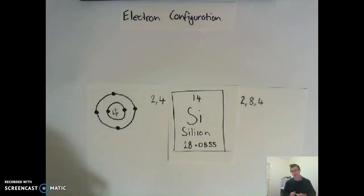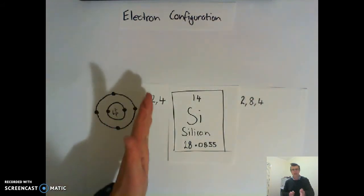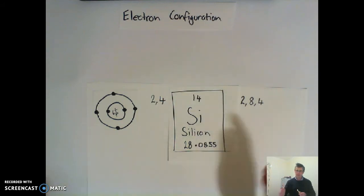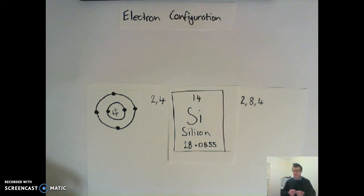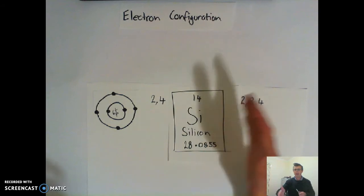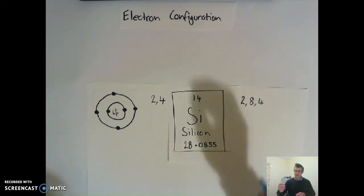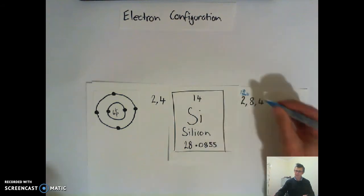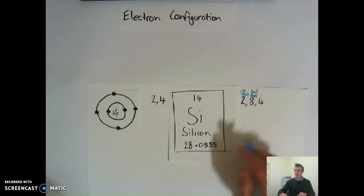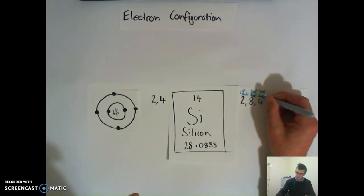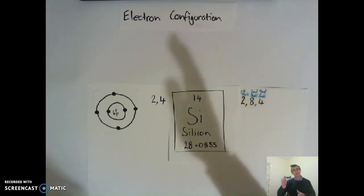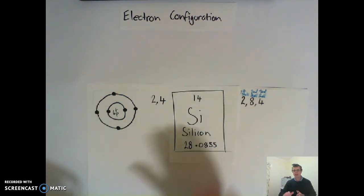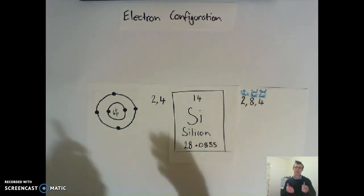Now here's the thing about these numbers. I can look at that electron configuration and tell you where silicon lives on the periodic table. We've got 2 because that's our first shell, 8 because that's our second shell, and 4 because that's our third shell. What we're saying here is that silicon has three shells — three energy levels — and anything that has three shells must live in period three on the periodic table.